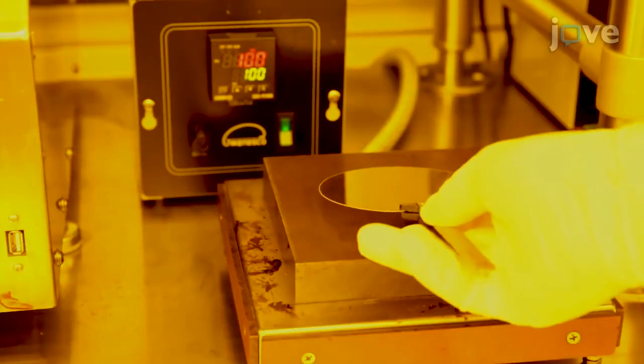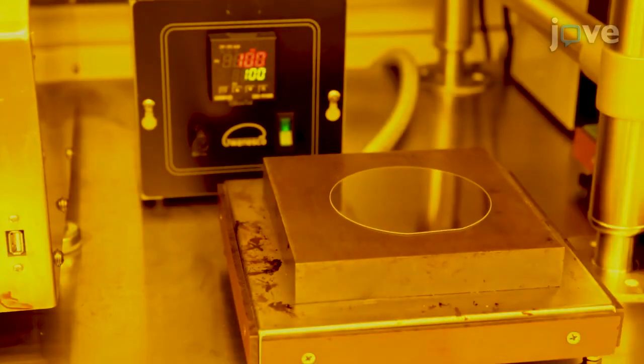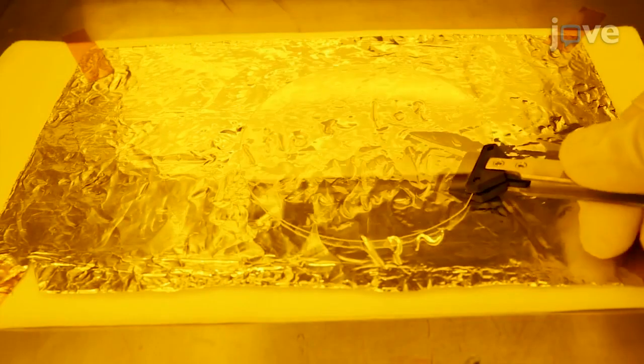To pre-bake the wafer, place it on a hot plate at 100 degrees Celsius for 3 minutes, then move the wafer to aluminum foil.